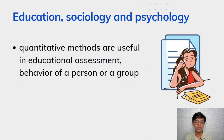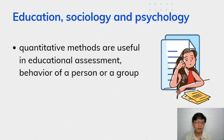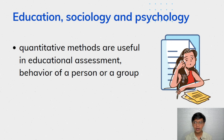Quantitative methods are also useful in the fields of education, sociology, and psychology. We all know that quantitative methods are useful in educational assessment. The reason why we often give quizzes and tests is because we are getting numbers from you — data that would help us determine if we need to proceed to the next lesson, give another kind of intervention, or improve our approaches. Aside from educational assessment, quantitative methods are often applied in measuring the behavior of a person or a group. Before employment, HR would often give you tests on your emotional quotient or EQ, your IQ or intelligence quotient, and also your behavior.